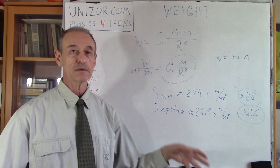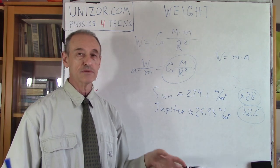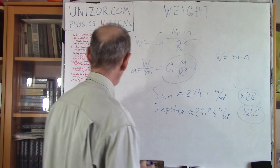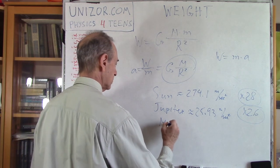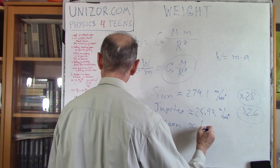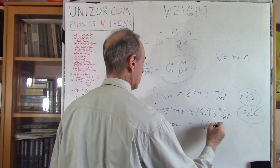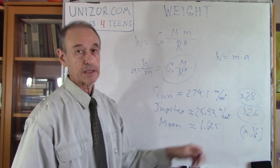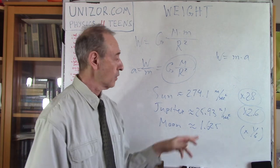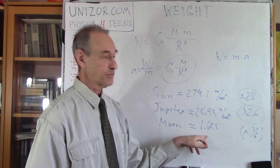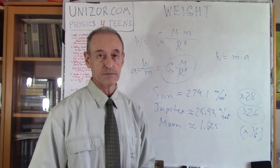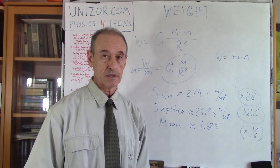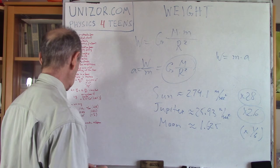The further you are from the center, the less the force of gravity is. Mass is one thing, radius is another. And the last number: for the Moon, the free-fall acceleration is approximately 1.625 meters per second squared, which is about 1/6 of the 9.8 of Earth. So things will be lighter by a factor of 6 on the Moon than on the Earth.